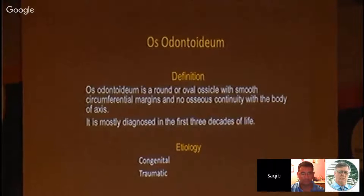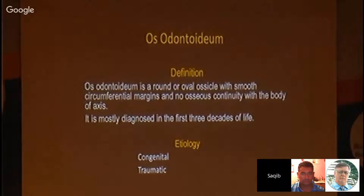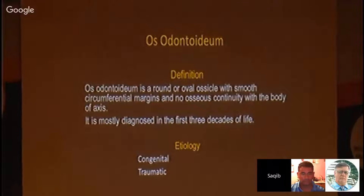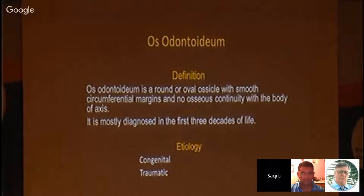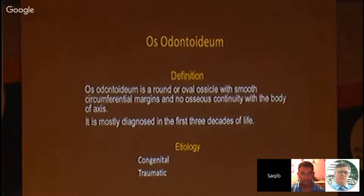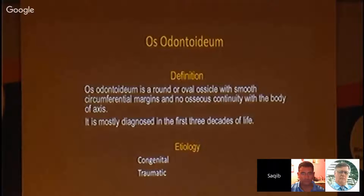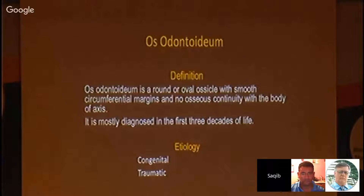What is os odontoideum? It is a round or oval ossicle with smooth circumferential margins and no osseous continuity with the body of the axis. It's mostly diagnosed in the first three decades of life, so in older ages we don't see it much.